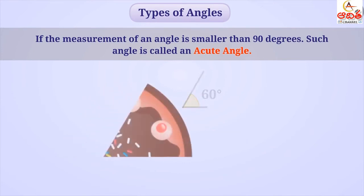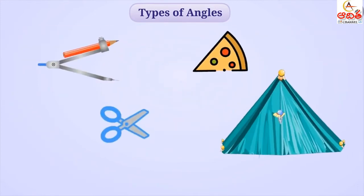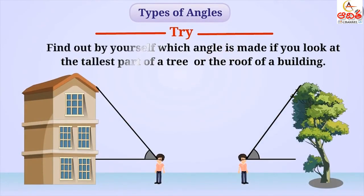For example, this piece of cake is forming an acute angle. Similarly, you can see acute angles in the displayed situations. Now try to find out by yourself that which angle is made if you look at the tallest part of a tree or the roof of a building.